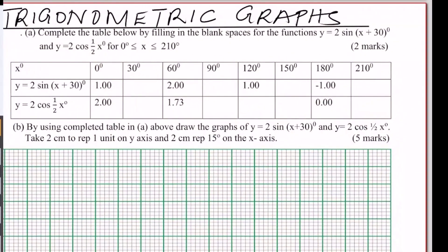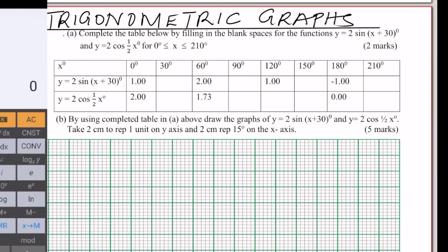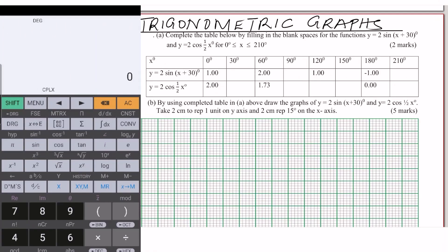Trigonometric Graphs. Part A: Complete the table below by filling in the blank spaces for the functions y = 2sin(x + 30°) and y = 2cos(½x) for x between 0° and 210°. Get your calculator so that you can fill this table. Look at the table — all values are given correct to two decimal places, and that is what you're supposed to maintain when filling in your answers.